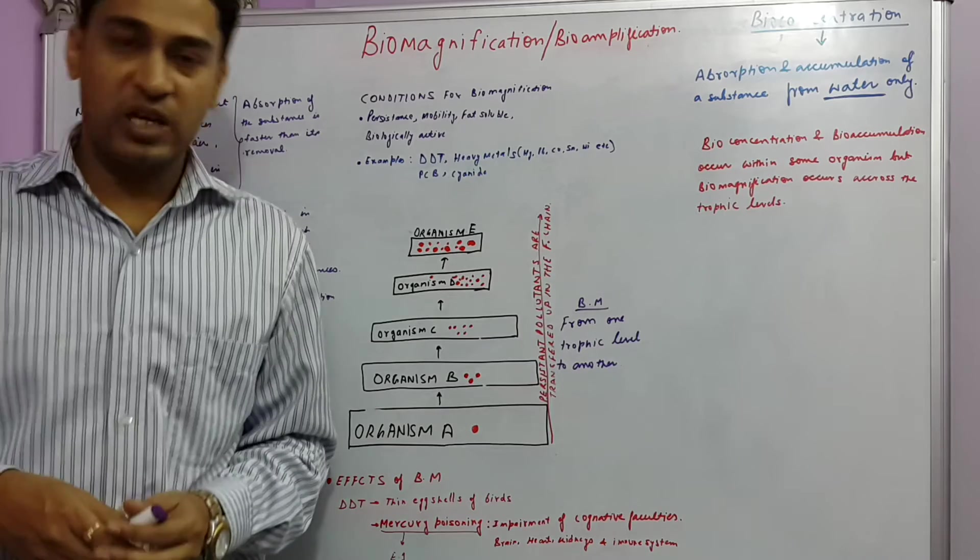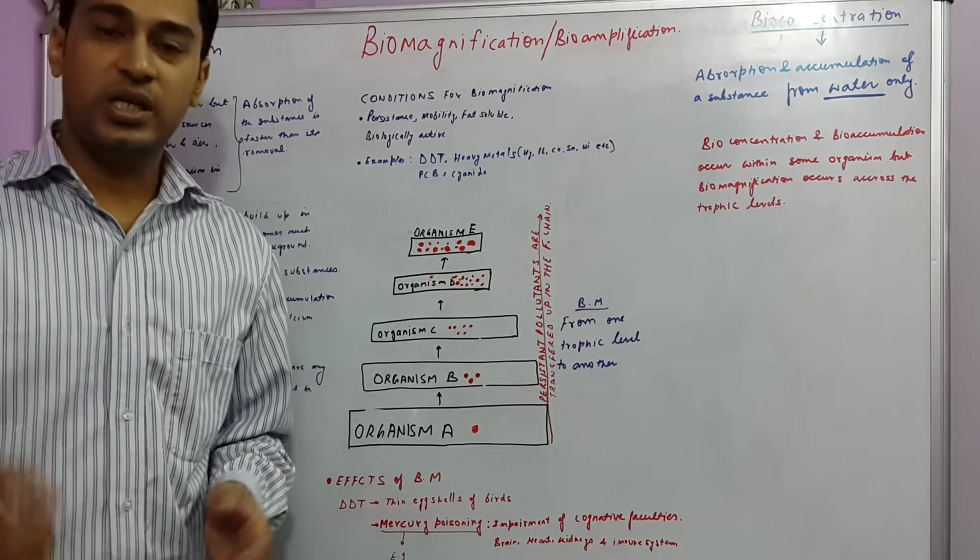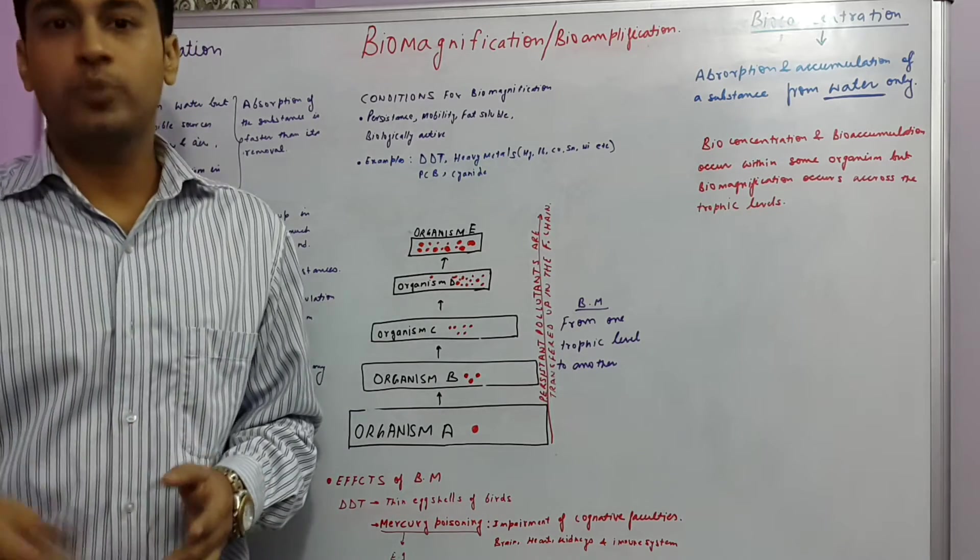And other than this, we can talk about heavy metals also. For example, mercury and lead. And these have very harmful poisoning effects.